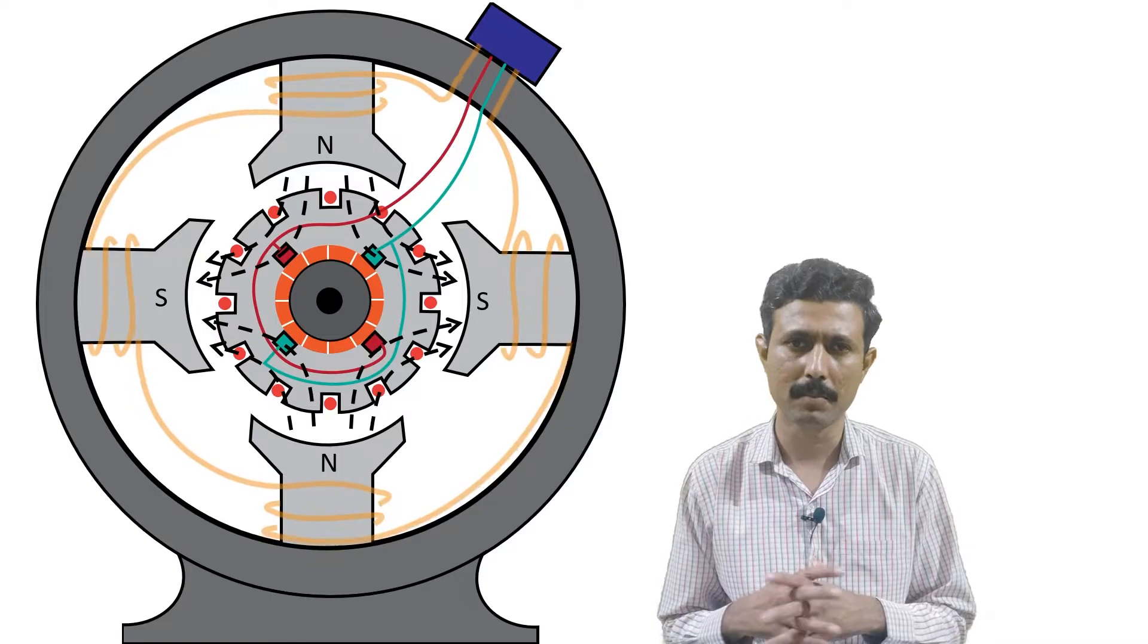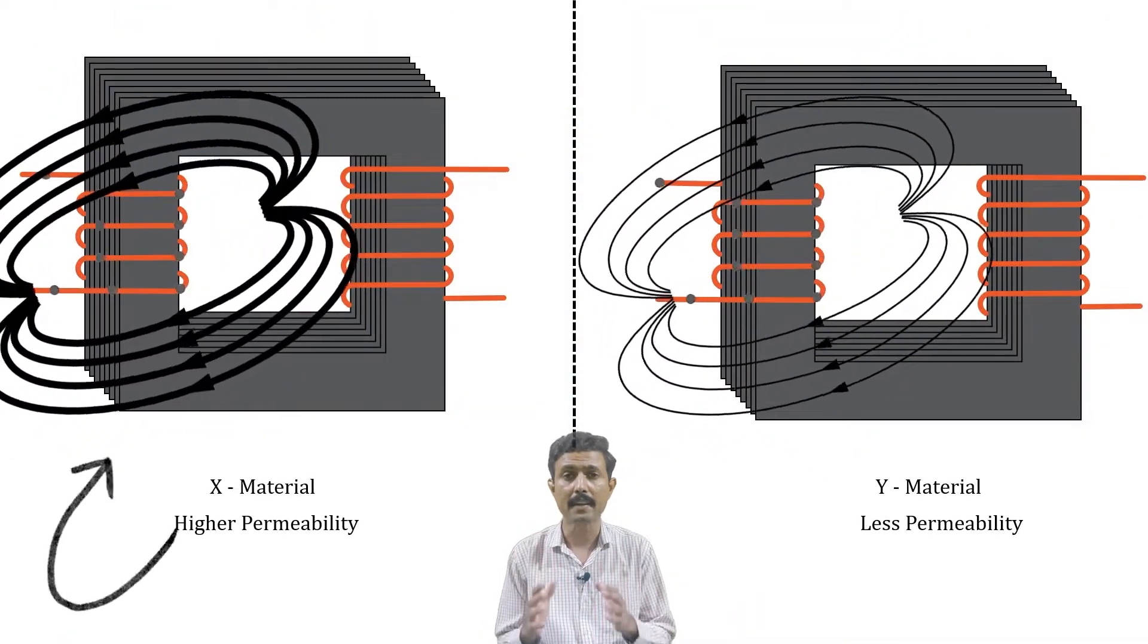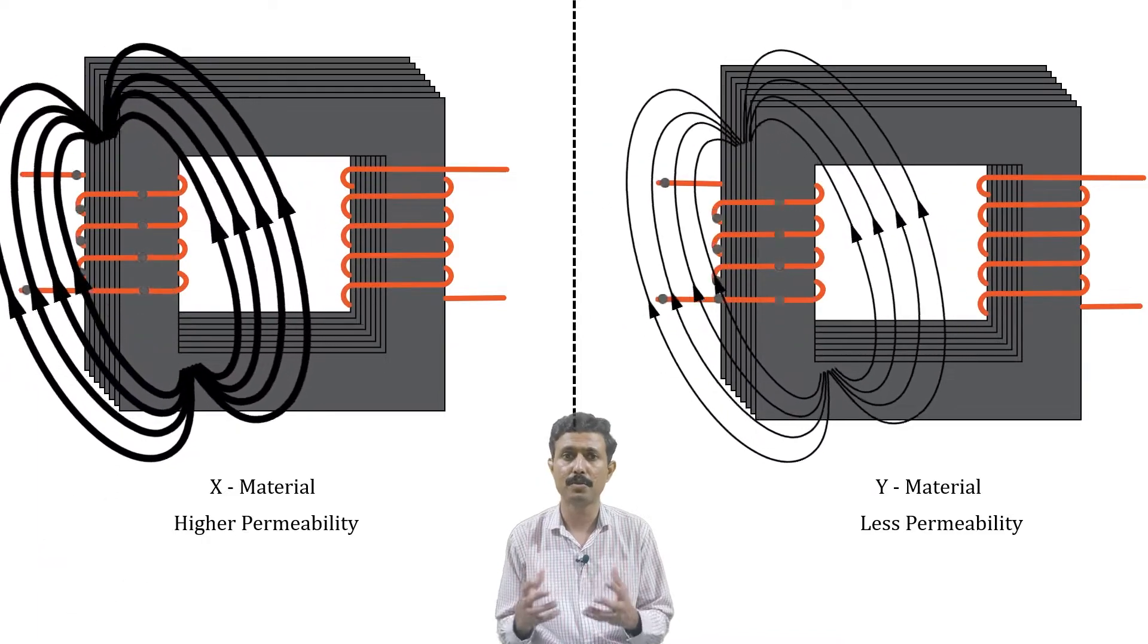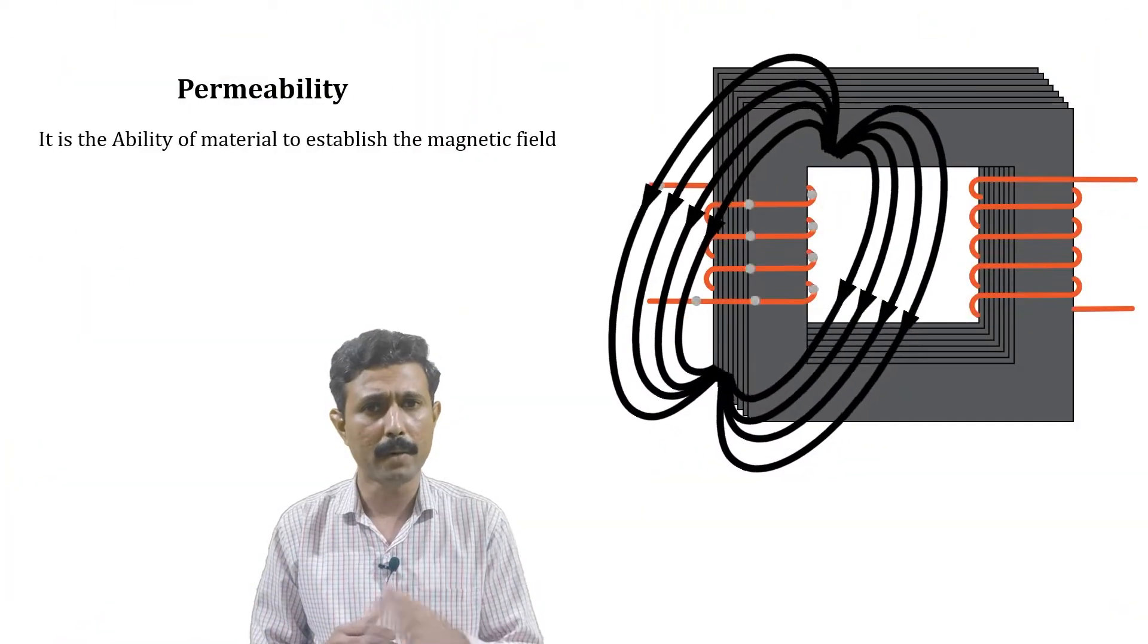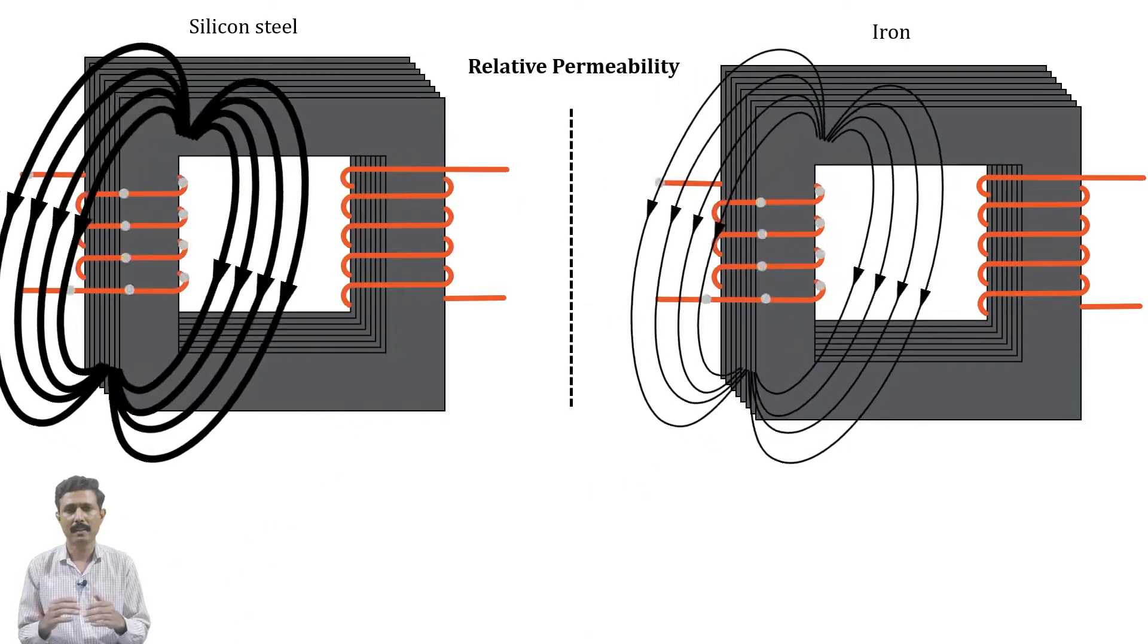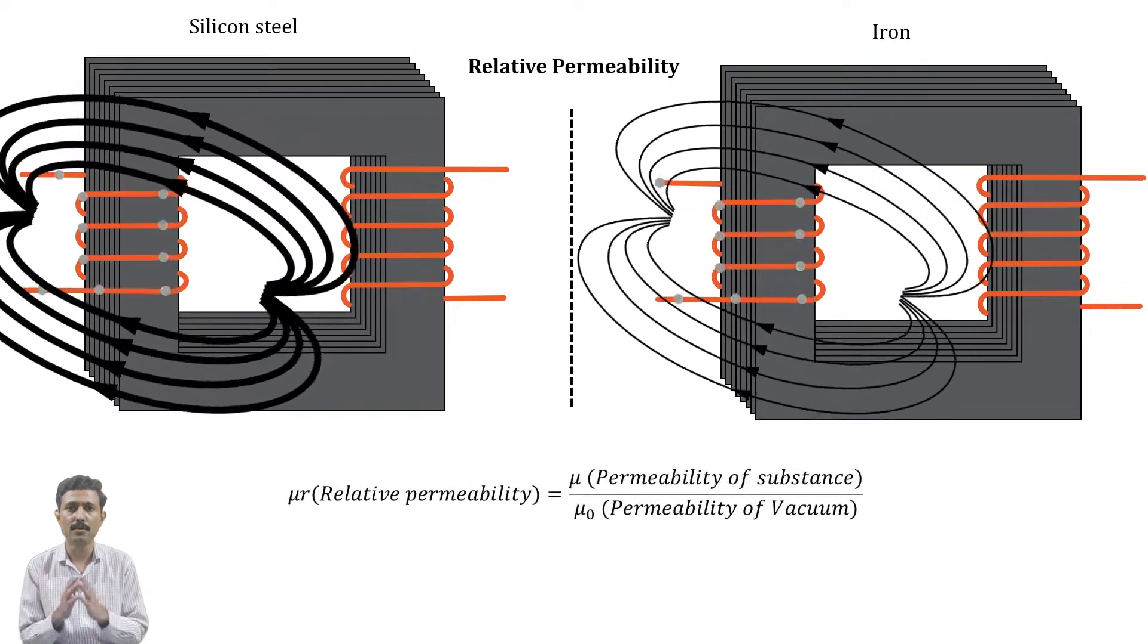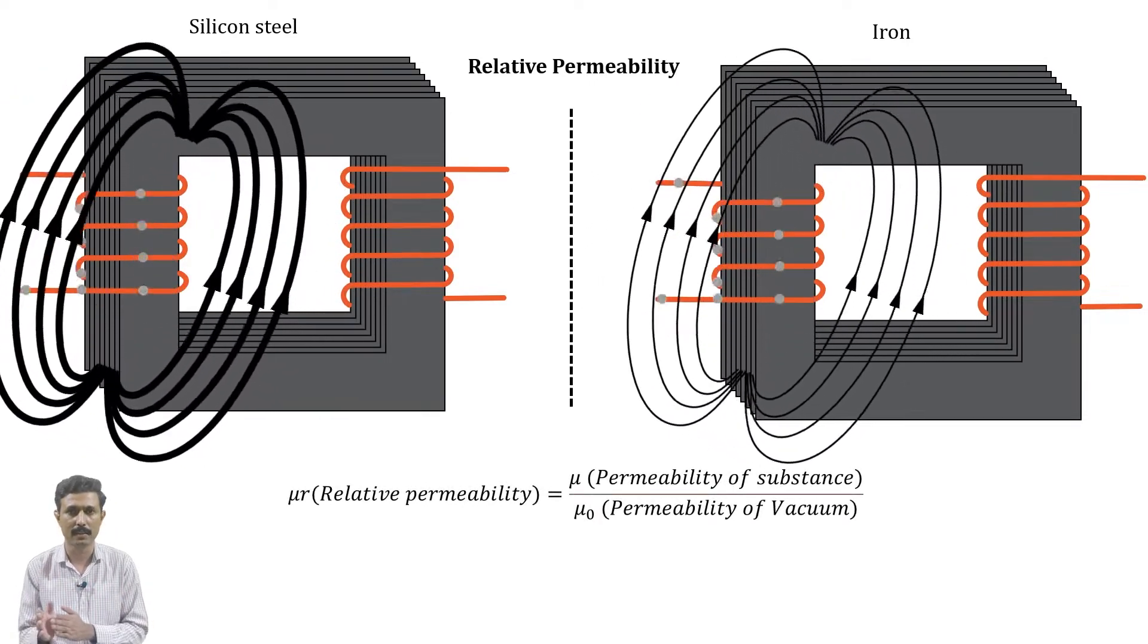Now for any material, the higher the permeability, the higher the magnetic field produced by it. So for our purpose, we should use the material with the highest permeability. If you don't know the permeability, then it is the ability of material to establish the magnetic field. Basically, there is a term known as relative permeability that is used everywhere to compare the permeability of one material with another material.